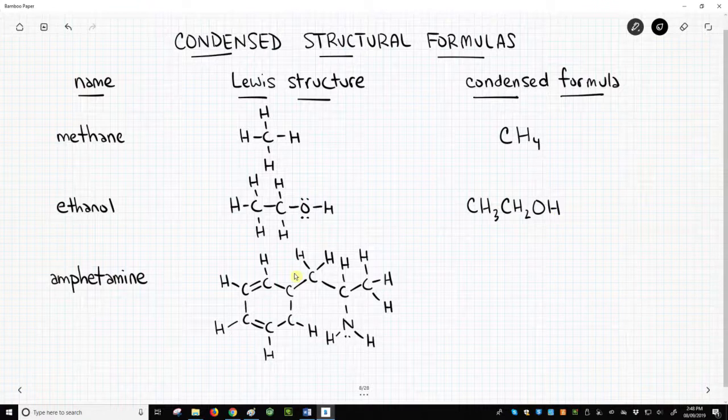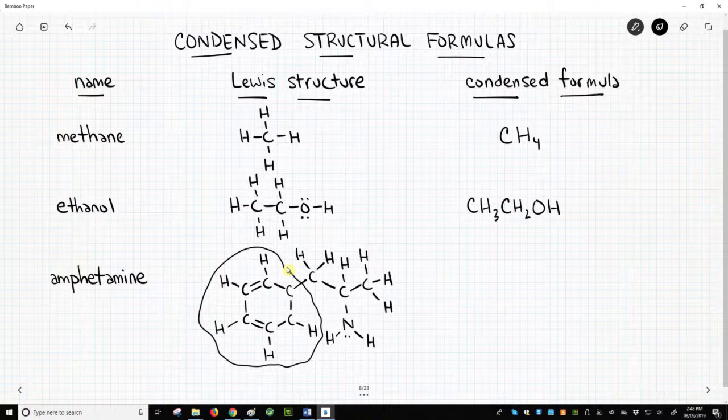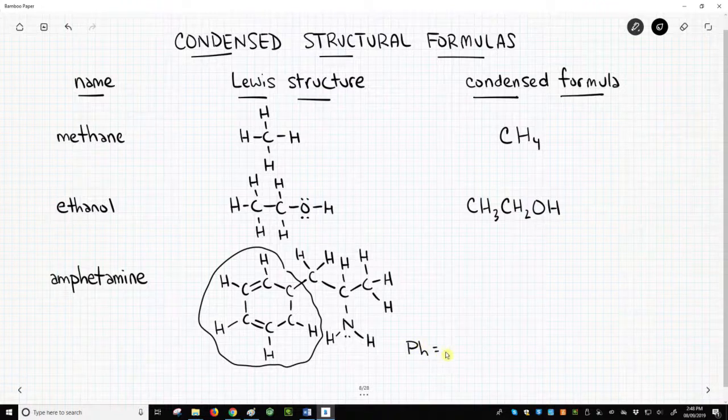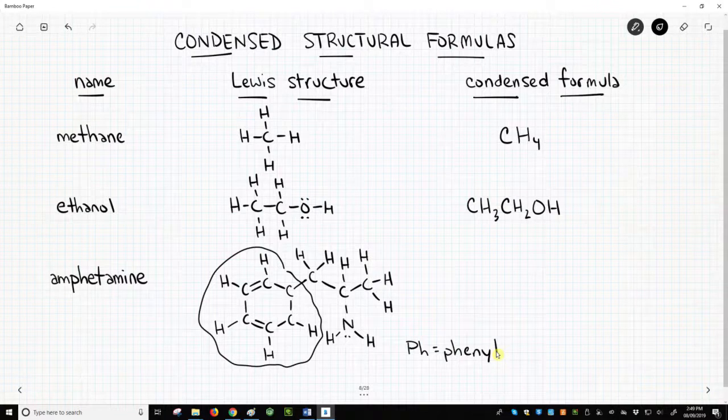Benzene rings are such common features in molecules that there is an abbreviation that people use for it. It is pH, and it stands for phenyl. That is an uppercase P and a lowercase H. A phenyl group is a benzene ring dangling off a molecule.